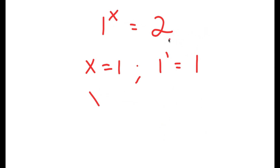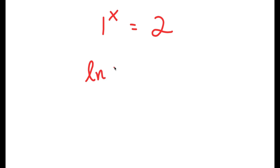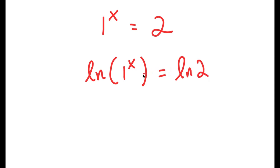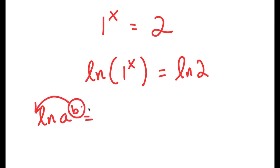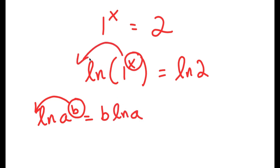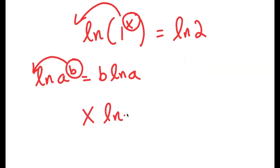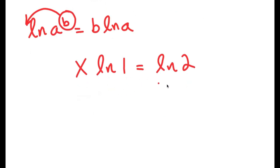So let's try solving this. What I'm first going to do is start by taking ln of both sides. So I get ln of 1 to the power of x is equal to ln of 2. And ln is the same thing as the natural log. The reason I took that on both sides is because of the property that states that if I have something in the form ln(a) to the power of b, I can move the exponent b to the front, turning it into b times ln(a). So in this case, I get x times ln(1) is equal to ln(2).